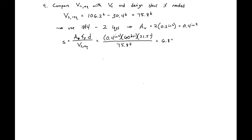We're going to round down to the nearest inch, so we're going to use number 4 bars at 6 inches on center throughout the entire beam length.